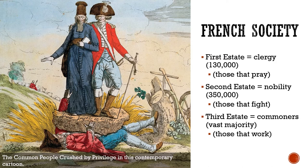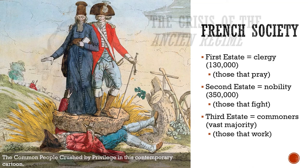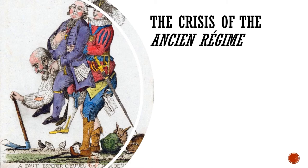Here you see a cartoon from that time period where the common people are being crushed by privilege. You see the first two estates — the nobles and the clergy — stepping on a heavy rock while the poor third estate man is being crushed underneath. Another cartoon shows the poor third estate carrying on his back a rotund noble and a member of the clergy. These cartoons demonstrate that many people in French society thought this system was completely unfair.